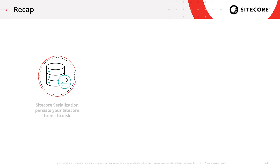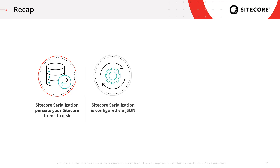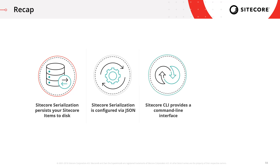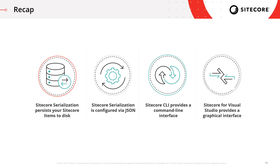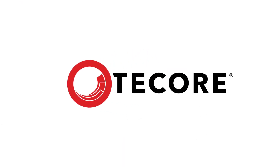So to recap: the Sitecore serialization tool allows you to persist your Sitecore items to disk, meaning you can store them in source control and integrate them into your DevOps flow. Sitecore serialization is configured via JSON modules, and these are used to specify precisely which items you want to be serialized. The Sitecore CLI is a command line tool allowing you to issue commands to your Sitecore instance, giving you the power to serialize items, push serialized items, publish your changes, and also to initialize a new project. Sitecore for Visual Studio is a graphical extension to Visual Studio, giving you the same functionality as the Sitecore CLI but from within Visual Studio itself. Thanks for watching, and don't forget to follow the LearnCycle hashtag for future videos.